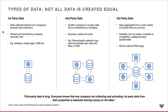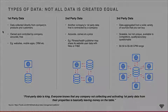The last type is third-party data. Third-party data is data that gets aggregated from a wide variety of sources — a wide network of publisher sites. You can buy this data, and the good thing about this data set is that there's lots and lots of it available.